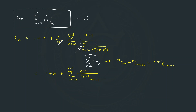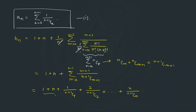Expanding this series gives 1 plus n plus 1 over (n+1)C1 plus 2 over (n+1)C2, and so on, up to n over (n+1)Cn. We see that this can be represented in compact sigma form if we convert it to (m+1) divided by (n+1)Cm+1.